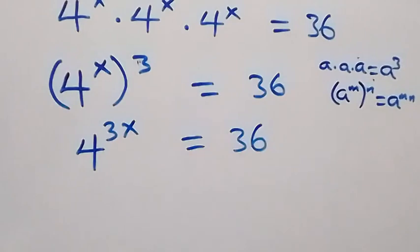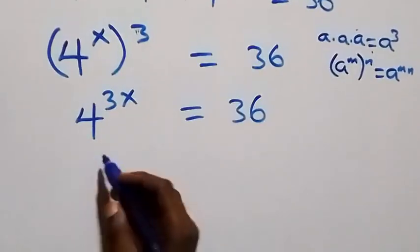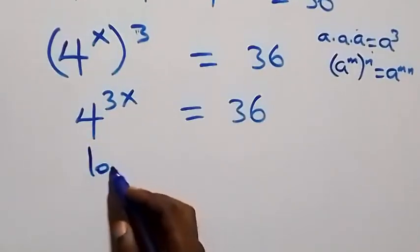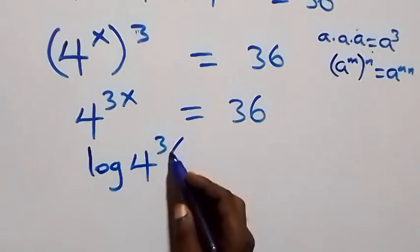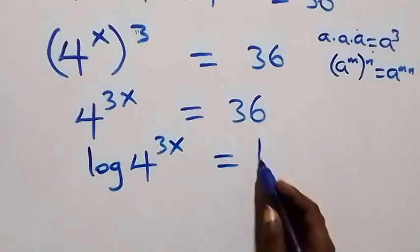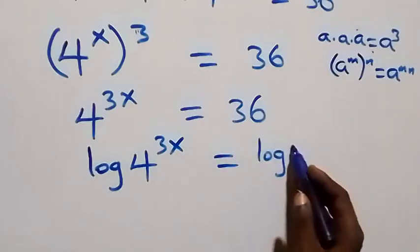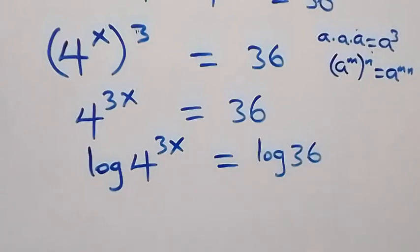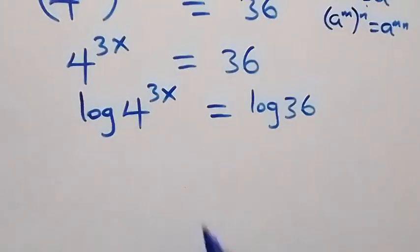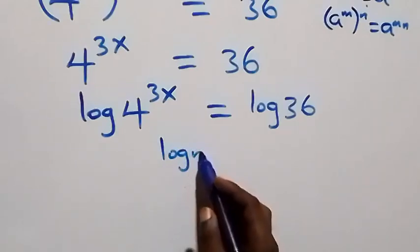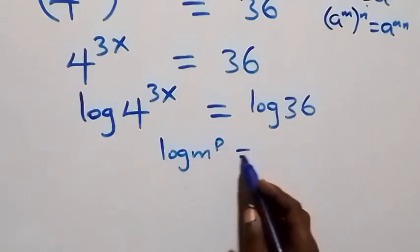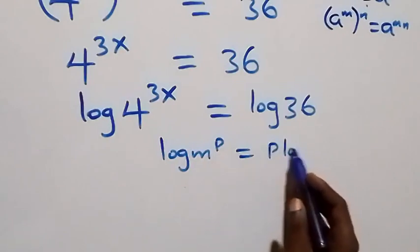The next step: we take the log on both sides. That is, we have log of 4 raised to power 3x equals log of 36. Then we apply the power rule of logarithms: log of m raised to power p is the same as p·log m.